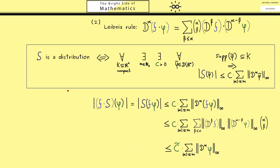Now we know that the multiplication between a smooth function and a distribution is well defined, and the result is again a distribution. I would say let's discuss more calculation rules for distributions in the next video. I really hope to see you there — have a nice day and bye.